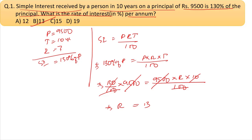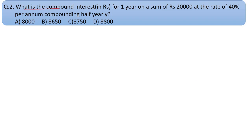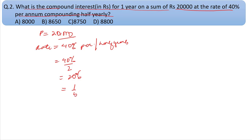Question number two: What is the compound interest in rupees for one year on a sum of Rs. 20,000 at the rate of 40% per annum compounding half-yearly? Principal is 20,000, rate is 40%, but compounding half-yearly means the rate is divided by two, so it's 20% per compounding period.